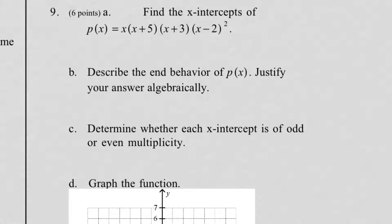Number 9 says, for 6 points: find the x-intercepts of P of x equals x times the quantity x plus 5 times the quantity x plus 3 times the quantity x minus 2 squared. That's only part A. The x-intercepts are each going to come from each factor of your polynomial. Each factor will give you an x-intercept.